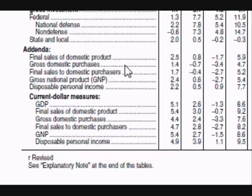The next section is gross domestic purchases, which is all goods and services bought in the US that were produced in the US. This section does not include imports or exports. The next section is final sales to domestic purchasers — this is all goods and services purchased in the US, whether they were made in the US or not.